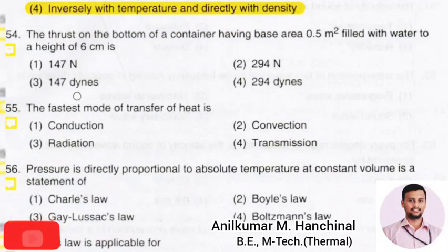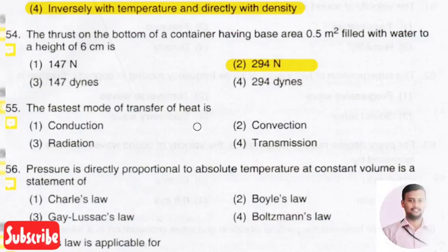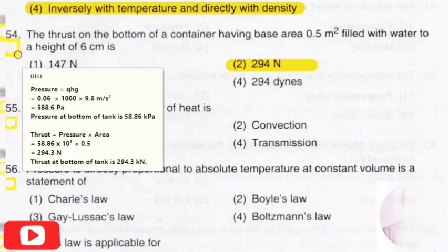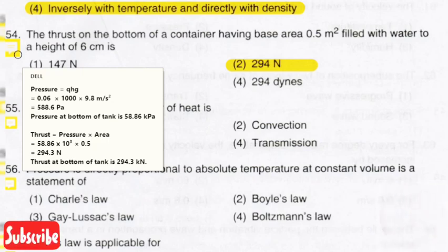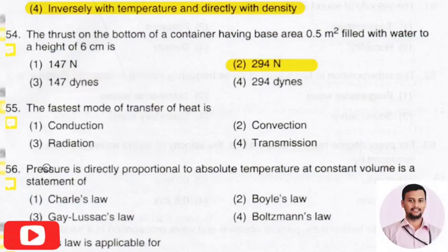The next question: the thrust on the bottom of a container having a base area of 0.5 m² filled with water to a height of 6 cm is? The right answer is option 2, that is 294 N. Pressure = ρgh = 1000 × 9.81 × 0.06 = 588.6 Pa. Thrust = pressure × base area = 588.6 × 0.5 = 294.3 N, approximately 294 N.